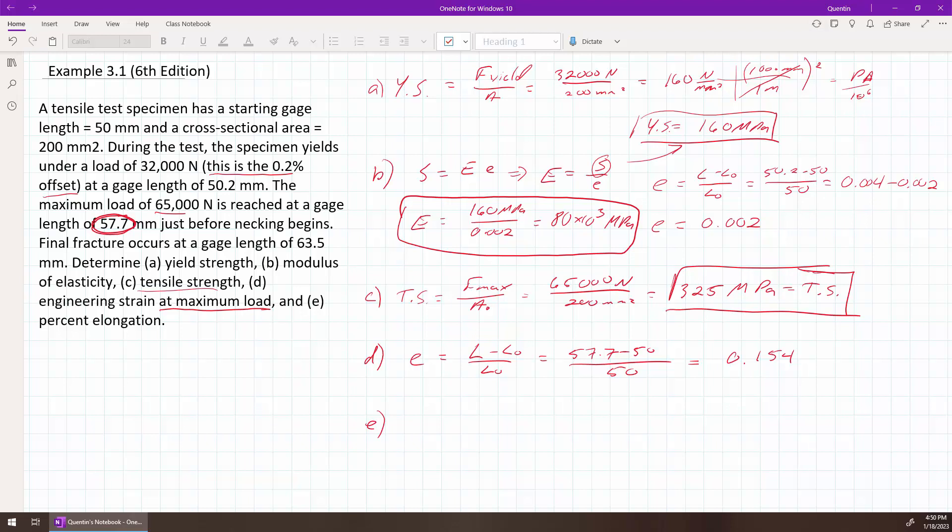And lastly, the percent elongation. Well, the percent elongation is simply how long it got. So 63.5 minus 50 over 50. So that works out to be, and then times 100 to turn it into a percent. That works out to be 27%. So that is the percent elongation.